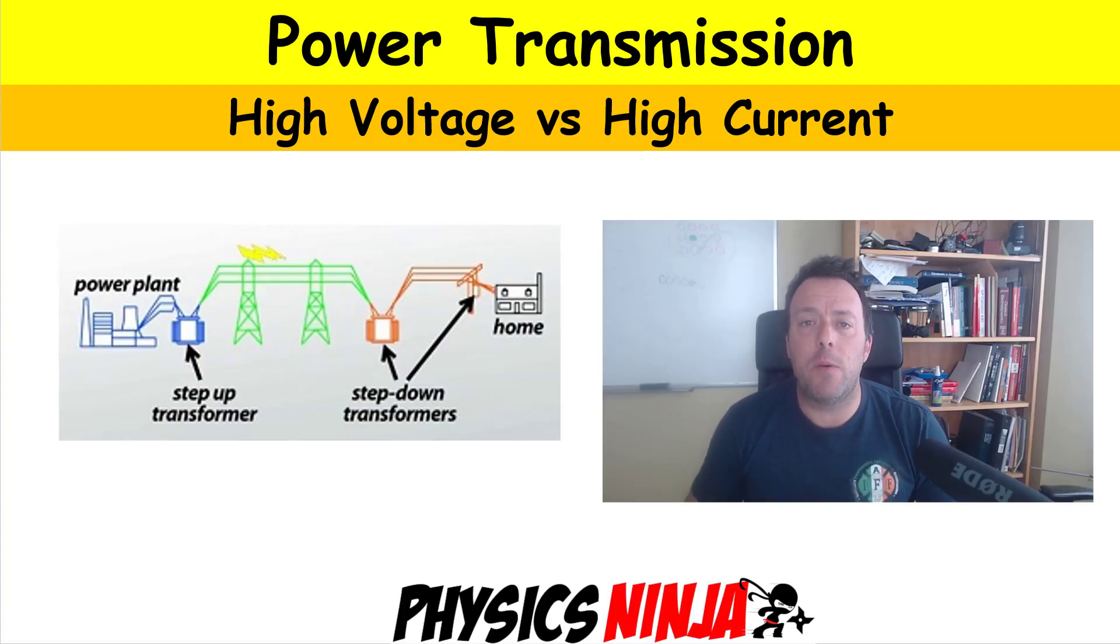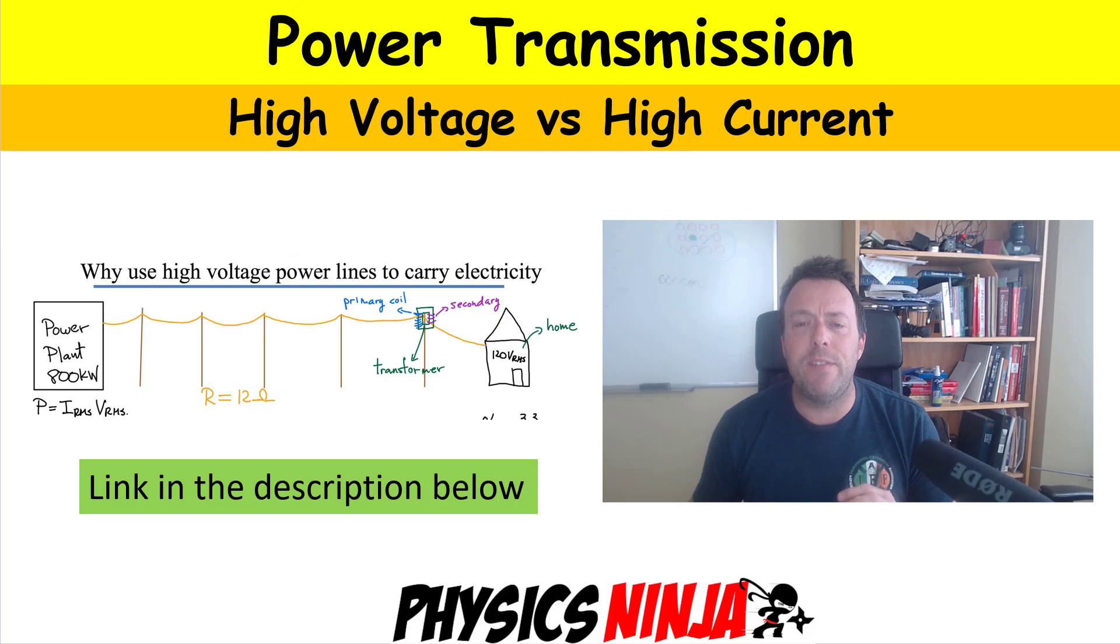Hi everybody, Physics Ninja. Today what I want to do is redo one of my previous videos. I get a lot of questions from my video on power transmission. Should you use high voltage or high current to transmit electricity along transmission lines? Based on all the questions I was getting from that video, I went back and looked at it, and the numerical example that I picked wasn't the greatest. Today's video is to clarify that point. I'm going to explain things a little bit simpler. I'll put the link to the previous video in the description below.